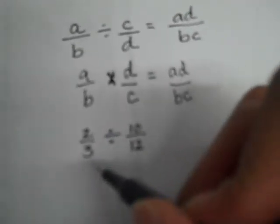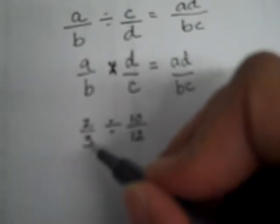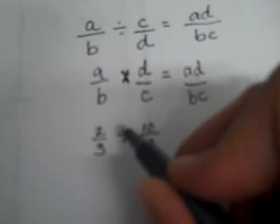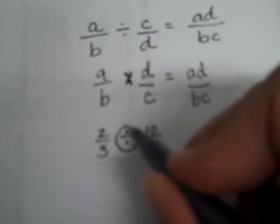Let's apply that rule to this special case: 2 thirds divided by 10 twelfths. It may be tempting to cross cancel here, but I can only cross cancel when I am multiplying. Right here I am dividing, so I need to first change this so it looks like multiplication.